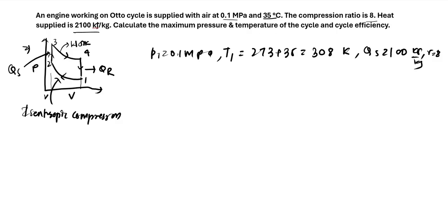We need to find the maximum pressure and temperature. Observing the process, maximum pressure and temperature both occur at point 3. Between process 1 to 2 it is compression — volume decreases, pressure and temperature increase. Between process 2 to 3 there is constant volume heat addition, so temperature increases further. After that, the expansion process causes temperature to decrease. Therefore, temperature and pressure are maximum at point 3, after heat addition.